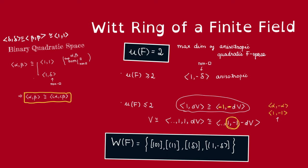And we can also see it explicitly because this is just the form x squared minus y squared. And clearly, we can find a non-trivial 0 for this. So we see that any quadratic space over F of dimension at least 3 is isotropic. So then the maximum dimension of an anisotropic quadratic F space must be 2.